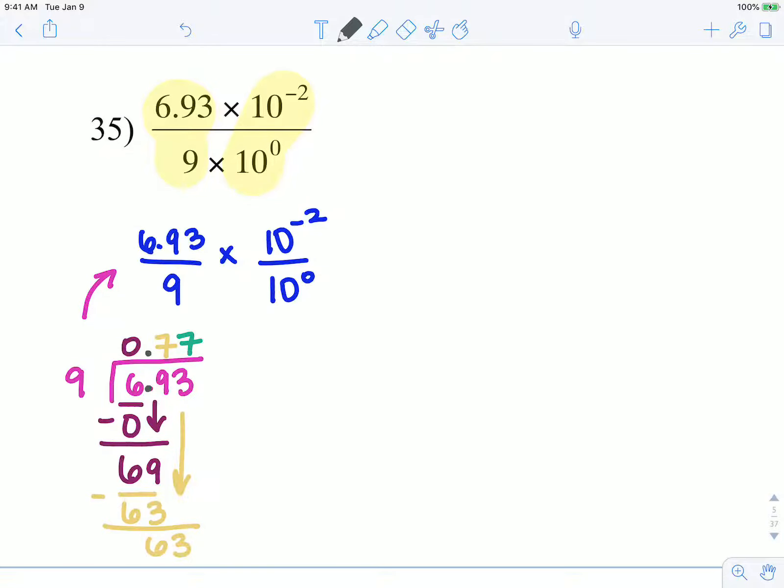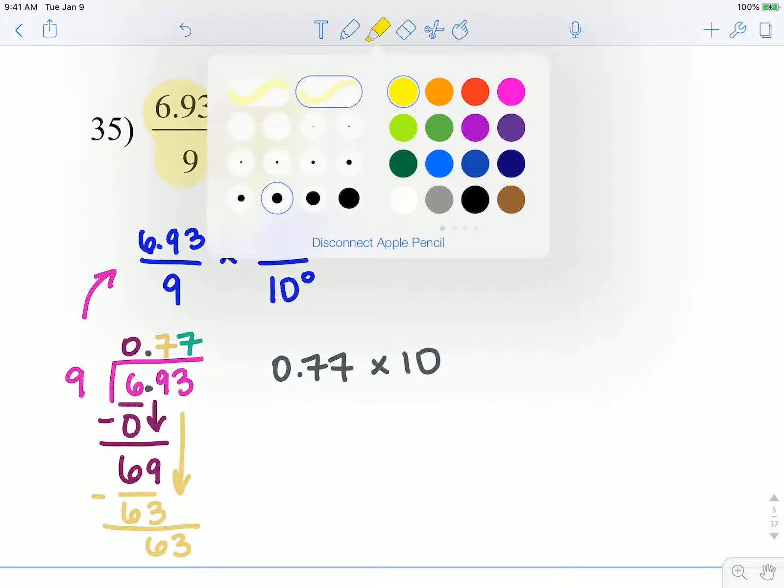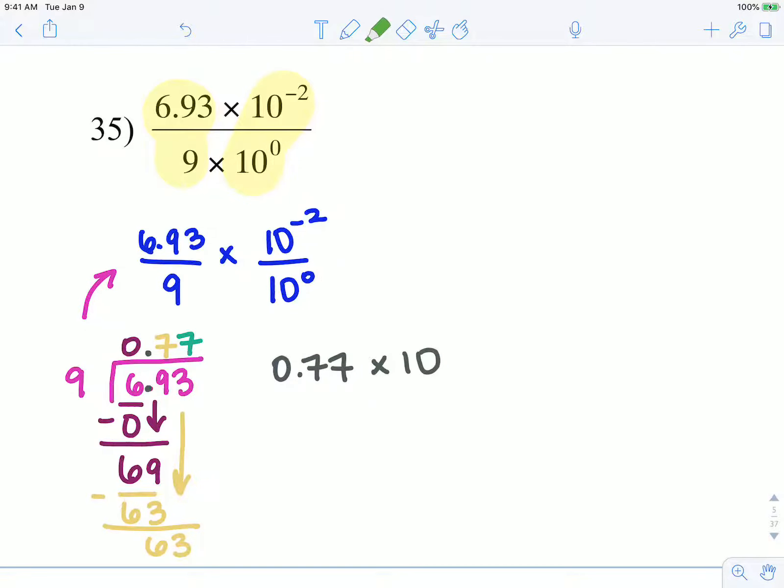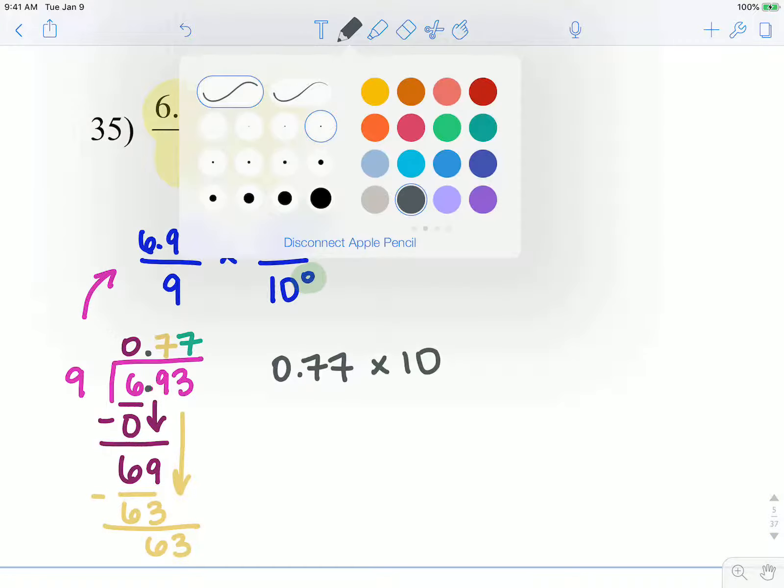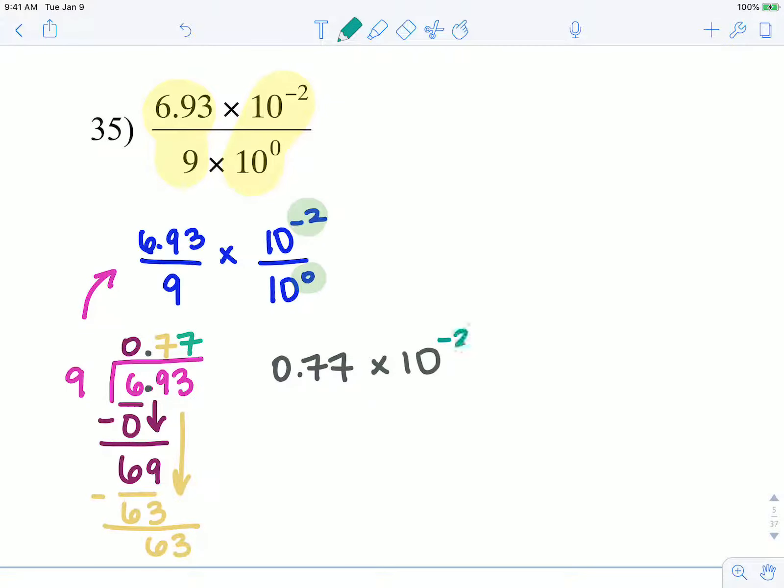So we now have 0.77 times 10 to what power. In order to figure out that power, I subtract: negative 2 minus 0 is negative 2.